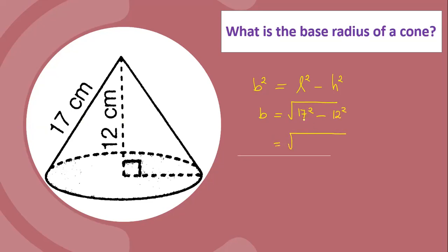17 times 17 is equal to 289. 12 squared is equal to 144. 289 minus 144 is equal to 145. So we have the square root of 145 cm, or in decimal, 12.04 cm.